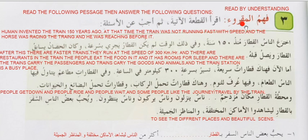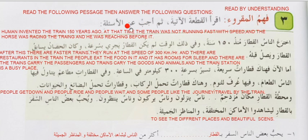Next page: Fahum maqruwa — read by understanding, or read to understand. Iqra al-qita al-aatiyah — aatiyah means following, qita means passage. Read the following passage, then answer the questions — an asala about the question.